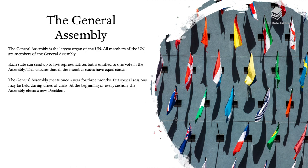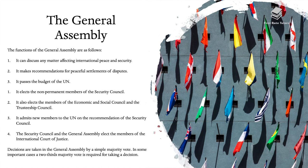The General Assembly is the largest organ of the UN. All members of the UN are members of the General Assembly. Each state can send up to five representatives but is entitled to one vote in the Assembly, ensuring that all member states have equal status. The General Assembly meets once a year for three months, but special sessions may be held during times of crisis. At the beginning of every session, the Assembly elects a new president.